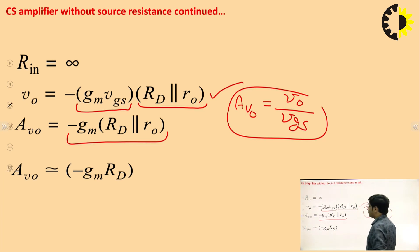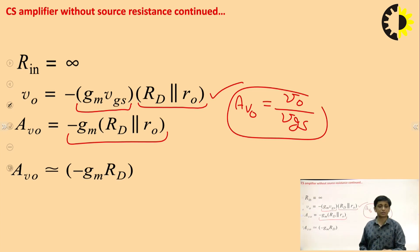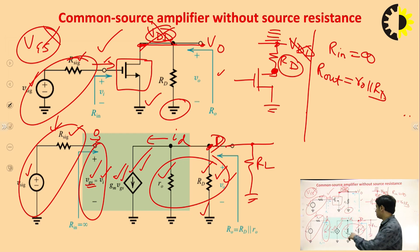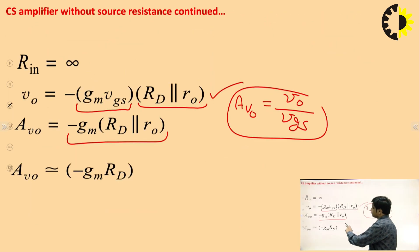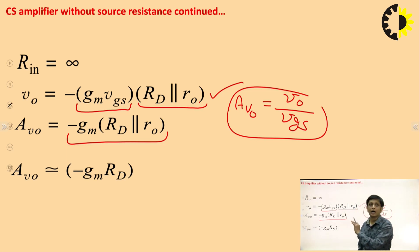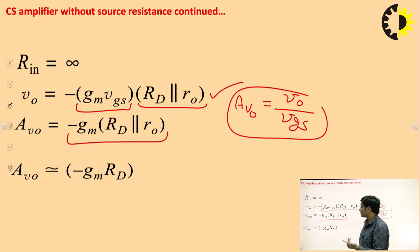Here, Av0 denotes the open-circuit voltage gain — meaning load resistance RL is infinite. In this circuit, no load resistance is connected. If a load resistance is connected, it will appear between drain and ground in parallel, and the voltage gain becomes Av = −gm × (Rd || R0 || RL). For the open-circuit case, RL is infinite, so the total gain is Av0 = −gm × (Rd || R0). Simply Av includes the load resistance.